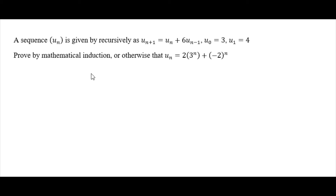In this video we are going to be solving an equation on recursive sequences. The problem is asking us to show that u(n) equals 2 times 3 to the n plus (-2) to the n, given the recursive definition u(n+1) = u(n) + 6·u(n-1), where u(0) = 3 and u(1) = 4.